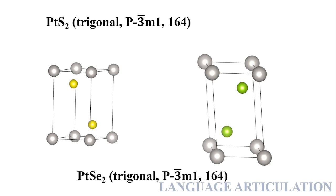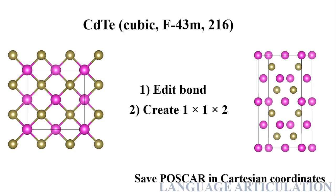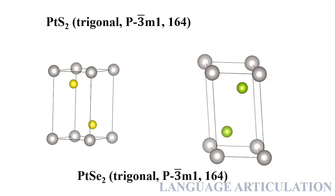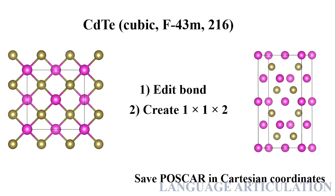This procedure will work for PtS₂ (trigonal system) and platinum disulfide. So starting from a trigonal or hexagonal system, these are very simple to create. The problem comes when the structure is somewhat complicated. I have shared hexagonal and trigonal systems; now I will work on the cubic system.